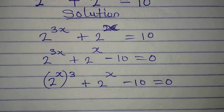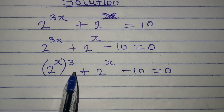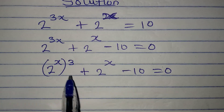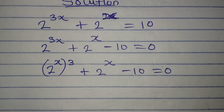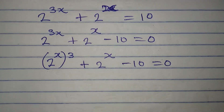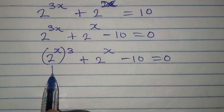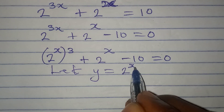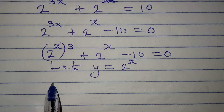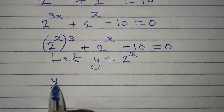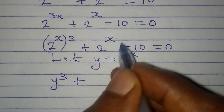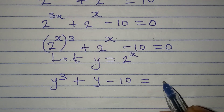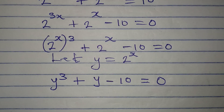If you change the position of this it's still the same, because you normally multiply the powers. Now we have 2 to the power of x in two places, so let y be equal to 2 to the power of x. Then here I'm going to have y to the power of 3 plus y minus 10 equal to zero.